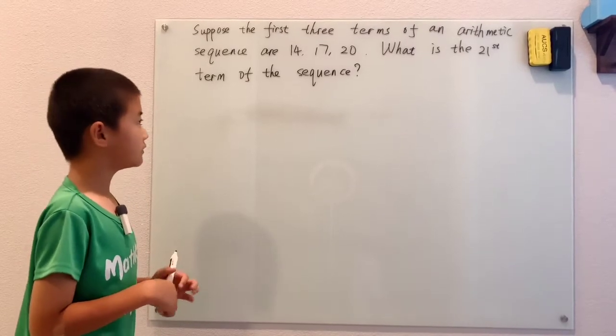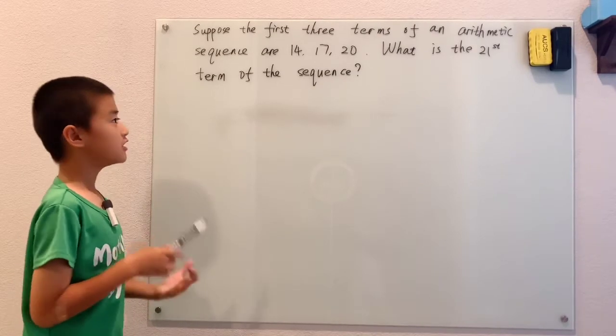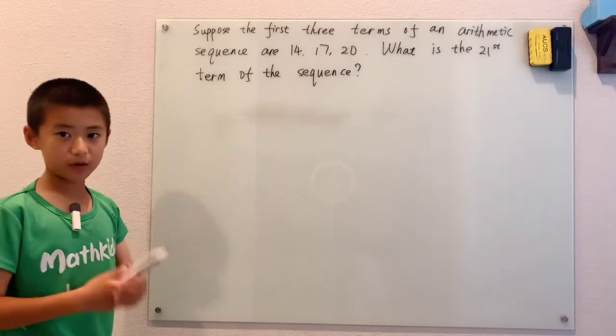Suppose the first three terms of an arithmetic sequence are 14, 17, and 20. What is the 21st term of the sequence?